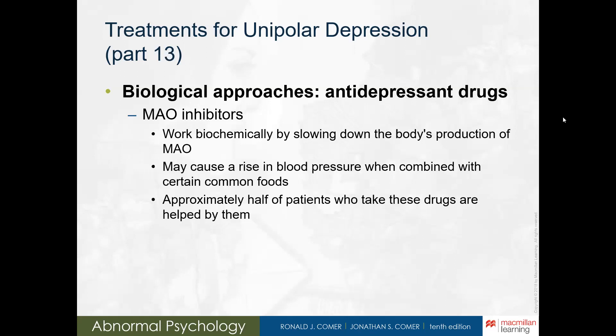How does an MAOI actually work? The monoamine oxidase enzyme breaks down norepinephrine, and the inhibitor stops this breakdown from occurring. This typically leads to a rise in norepinephrine activity and reduces depressive symptoms. When people taking MAOIs eat foods that contain the chemical tyramine — such as cheese, bananas, and wine — their blood pressure may rise to a dangerous level, so it's important to monitor diet when taking MAOIs.